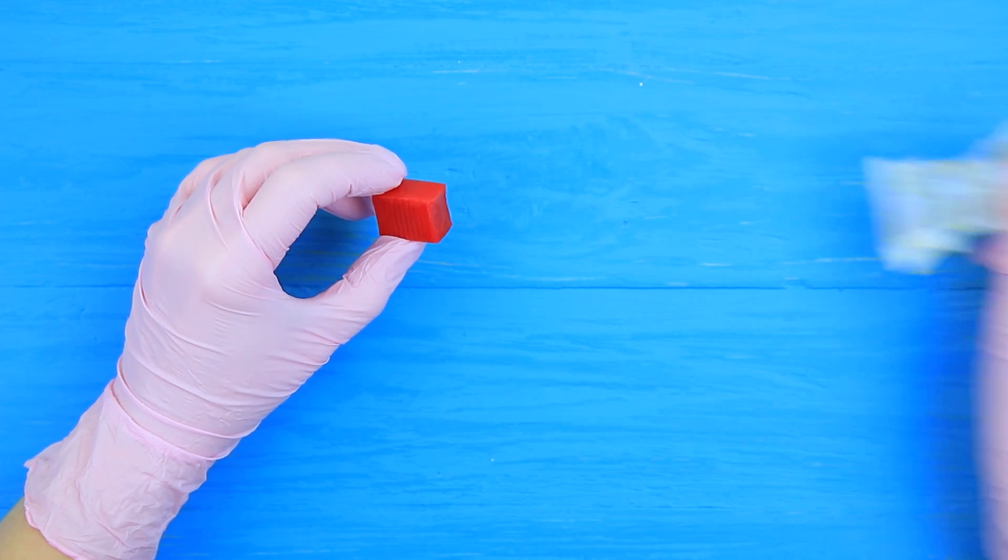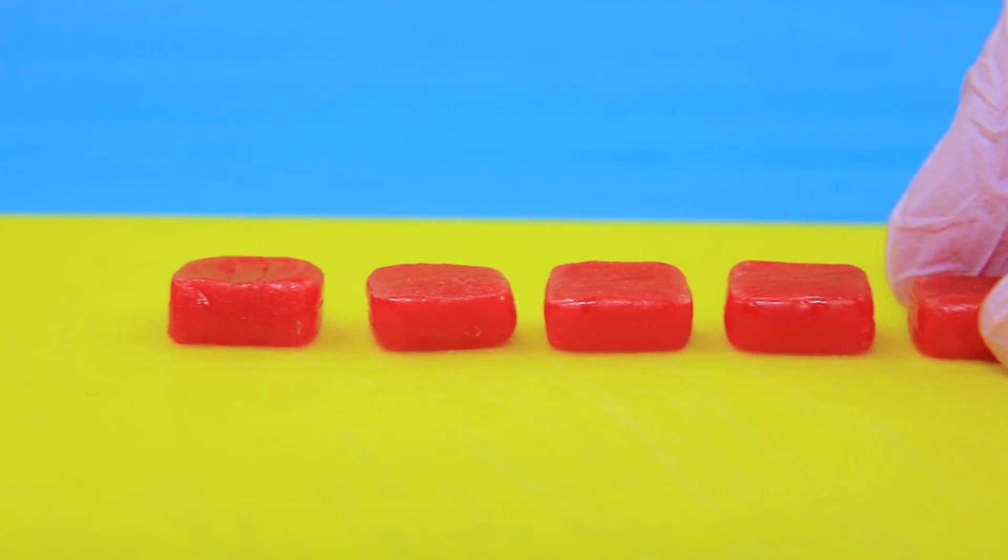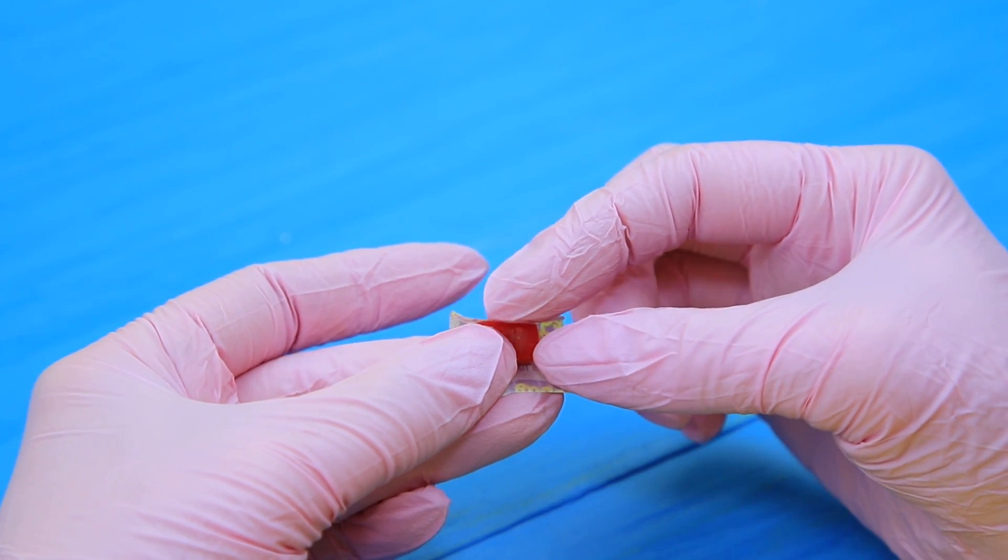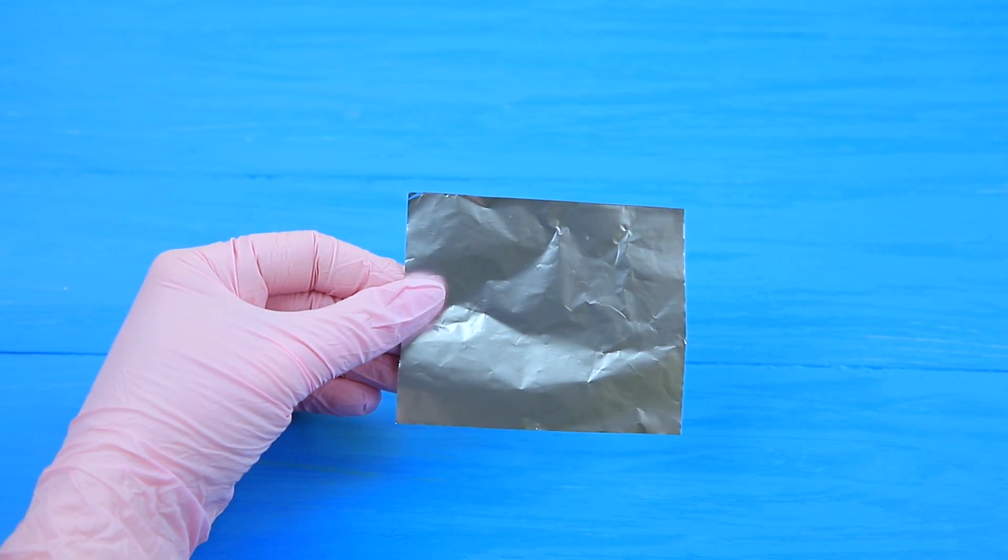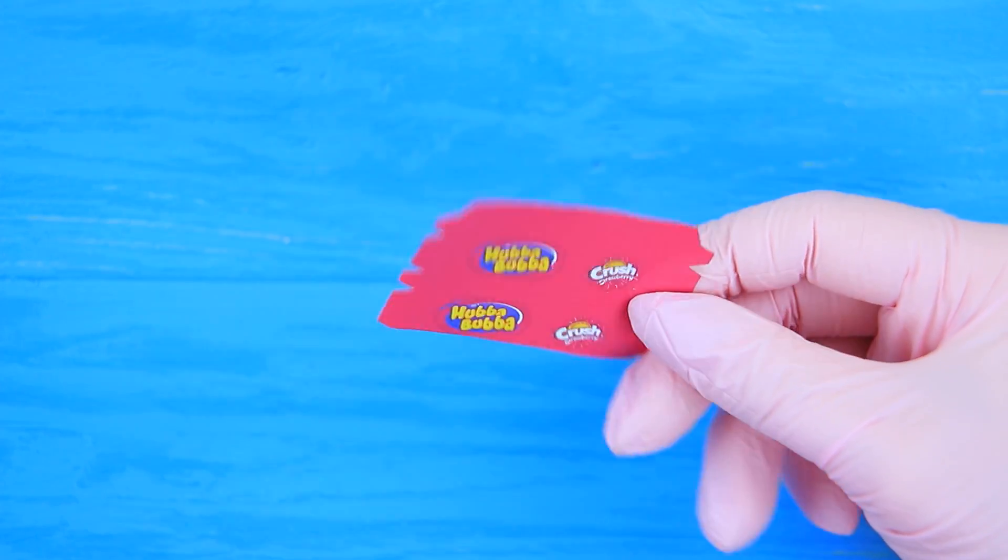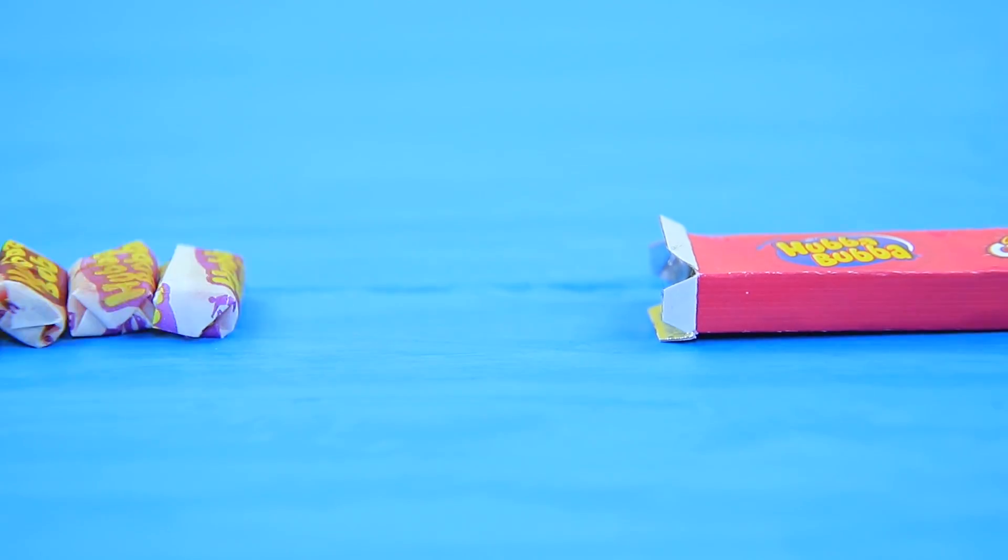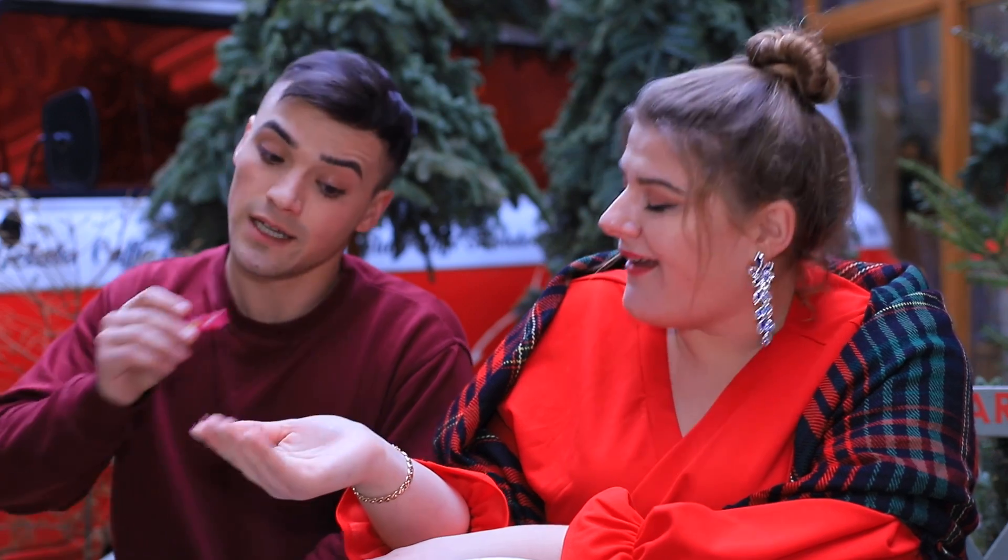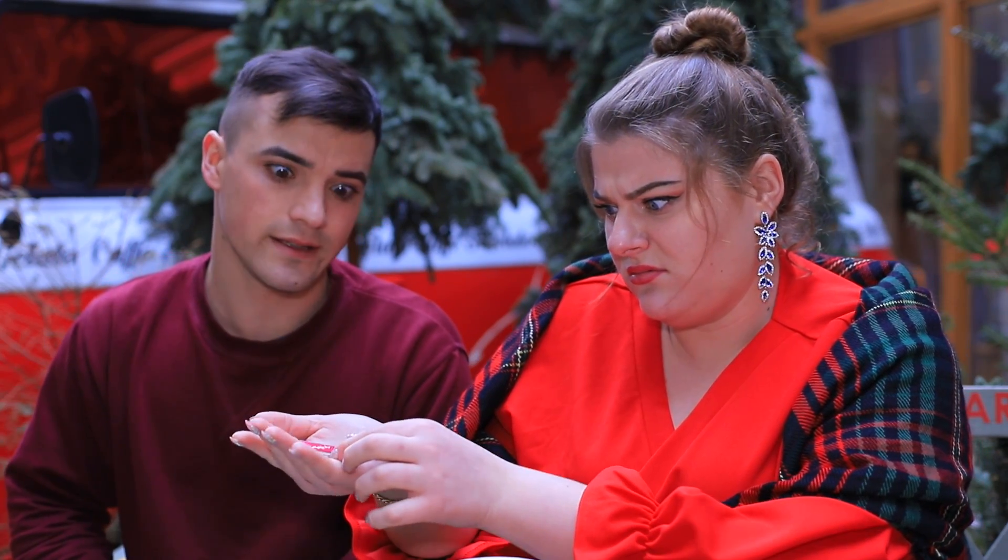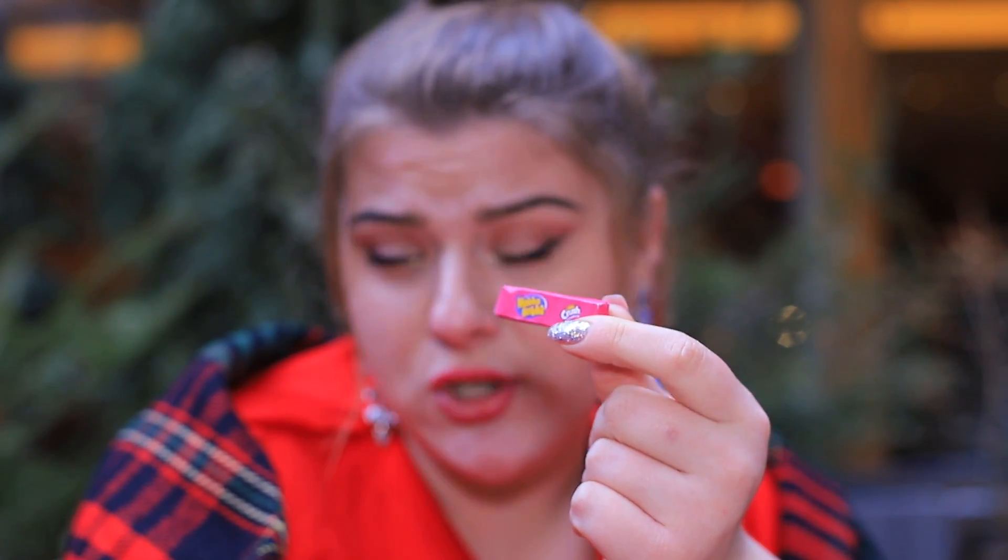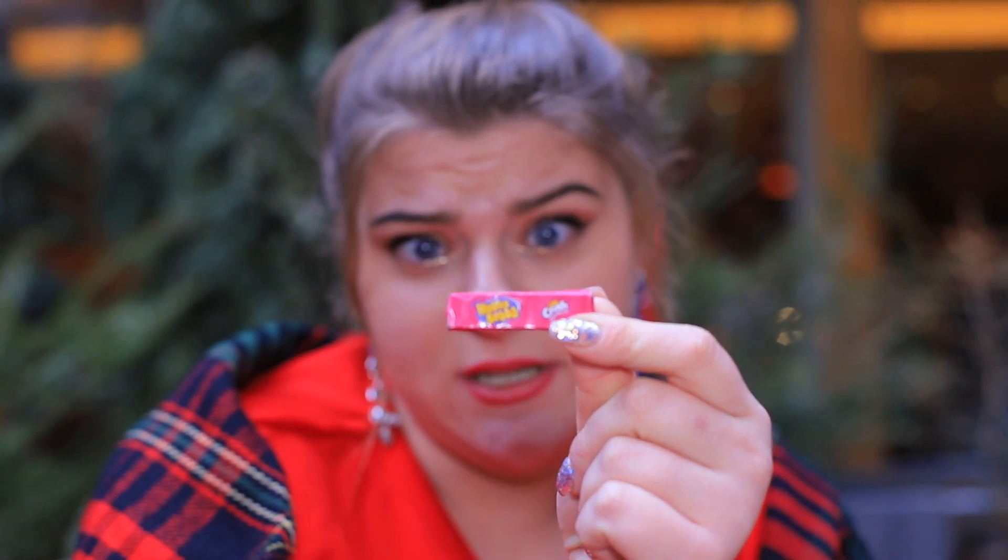Cut Hubba Bubba gum into little rectangles. Cut the wrapper too and wrap up each mini piece. Attach a printed mini Hubba Bubba label onto foil. Trim it to fit. Make a package and put the mini gum into it. Tiny Hubba Bubba? Is this all I deserve? This gum is only enough for one chew! You are such a generous friend!